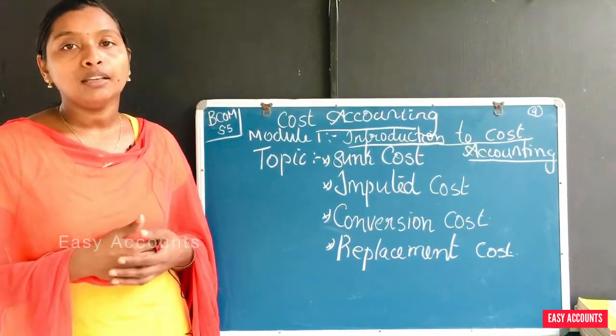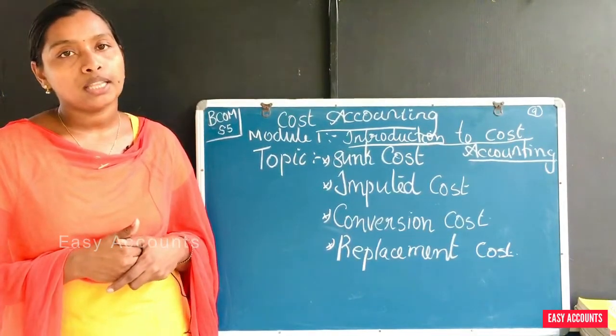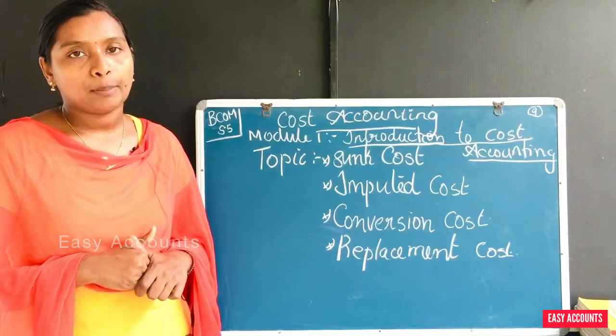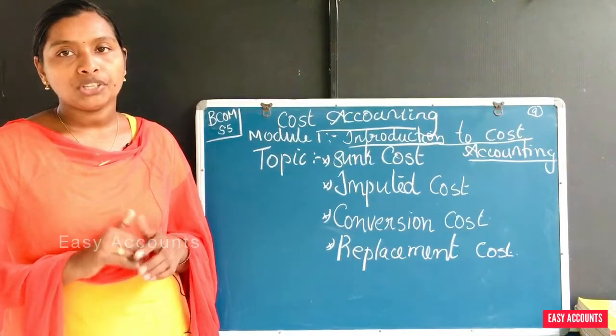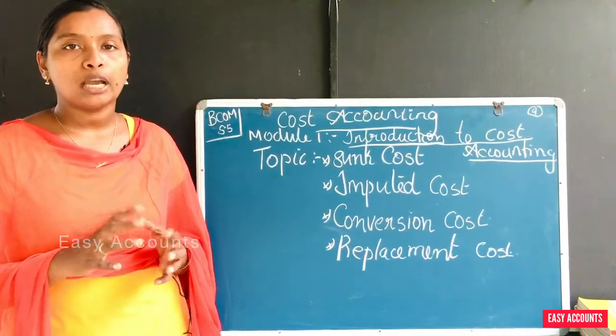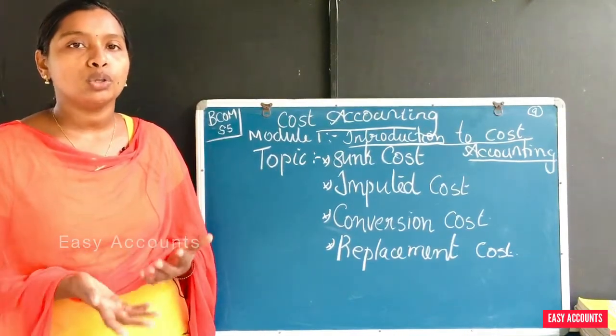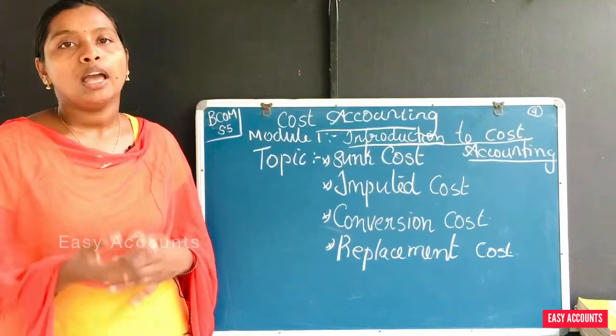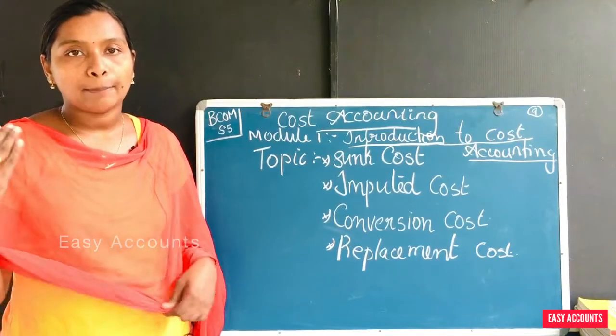Another example of imputed cost is interest on capital. Even if the owner does not actually pay interest on capital, it is still charged as an imputed cost in the books.